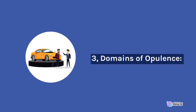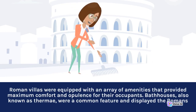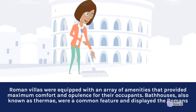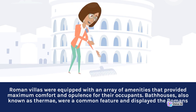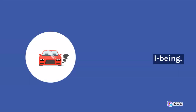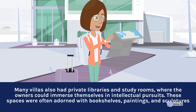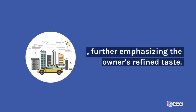3. Domains of Opulence. Roman villas were equipped with an array of amenities that provided maximum comfort and opulence for their occupants. Bathhouses, also known as thermae, were a common feature and displayed the Romans' love for luxurious bathing rituals. These bathhouses often boasted heated pools, hot and cold baths, sauna-like rooms, and exercise areas, all contributing to the residents' physical and social well-being. Many villas also had private libraries and study rooms, where the owners could immerse themselves in intellectual pursuits. These spaces were often adorned with bookshelves, paintings, and sculptures, further emphasizing the owner's refined taste.